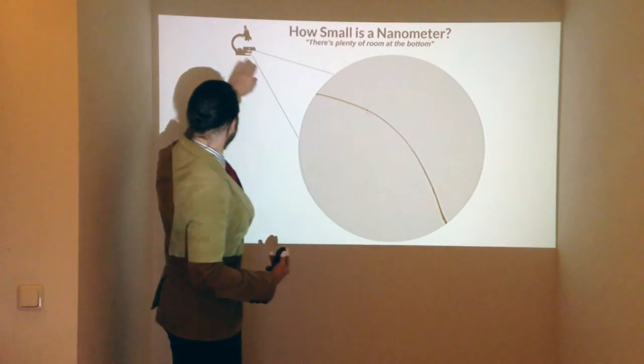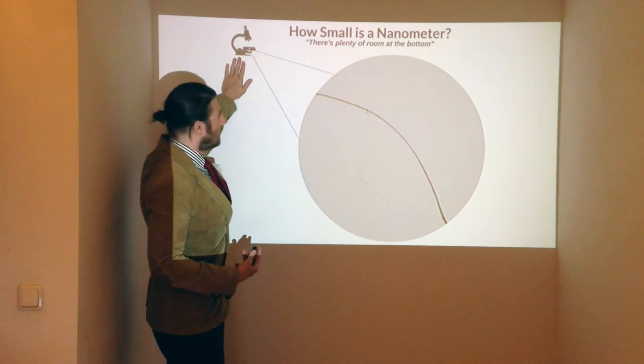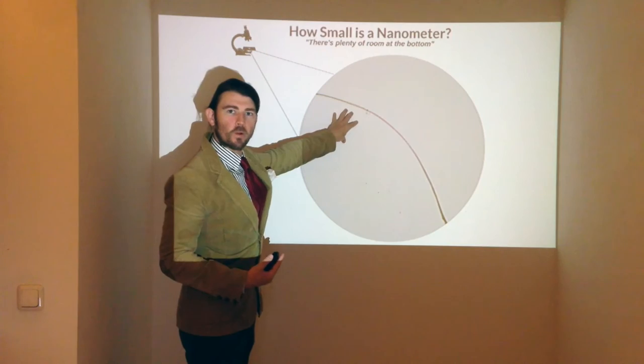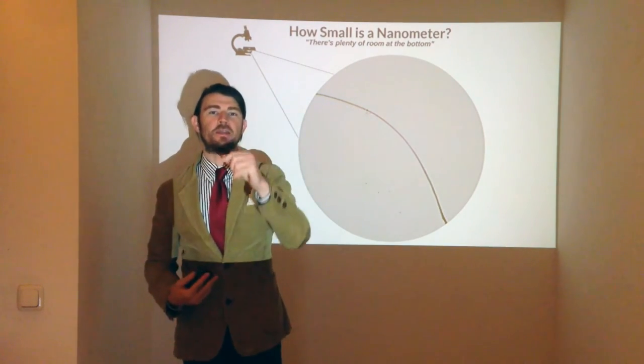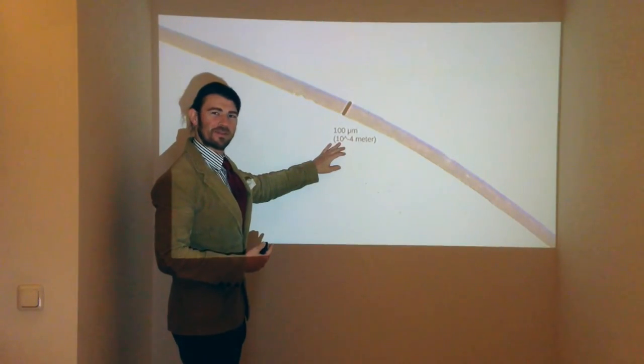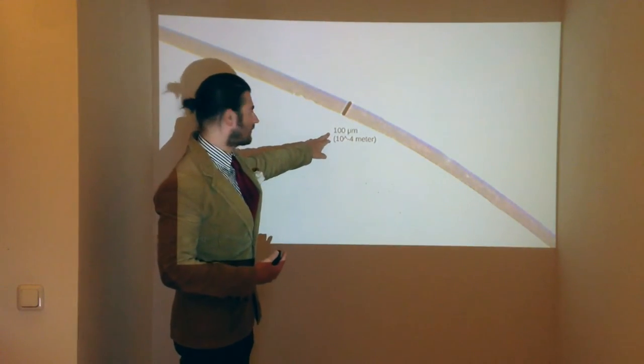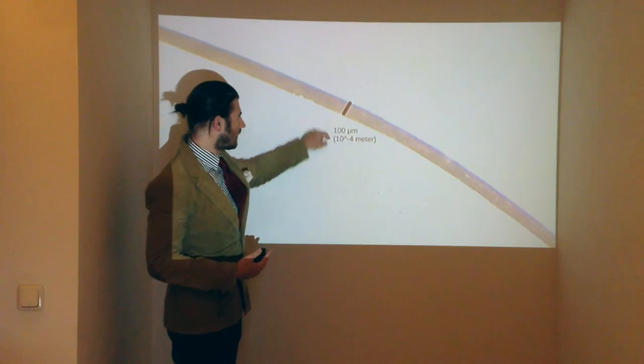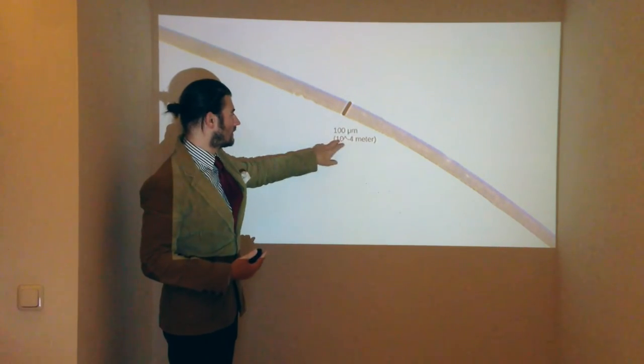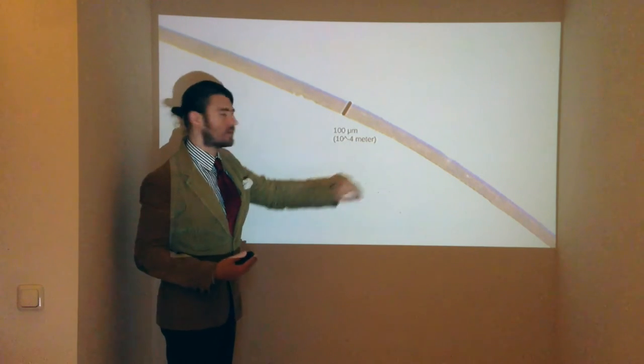Also we have here our magic microscope to peer into the world of the macro, micro, and even nano. Let's take a closer look. Oh, there we go. That's our first unit of reference. The width of a human hair is 100 micrometers. That's 10 to the negative fourth meters.